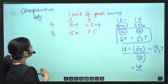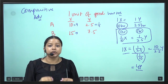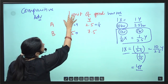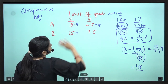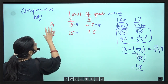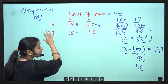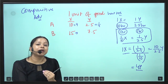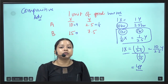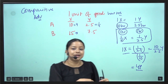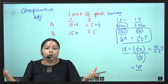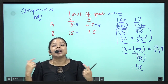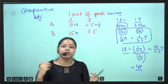Comparative advantage means the country where the opportunity cost of producing a good is low has the comparative advantage in that good. Country A and Country B are both producing goods X and Y. The country that has a comparative advantage in a good will specialise in producing that good, and both countries will trade with each other — best of both worlds. If India is good at one thing and the US at another, each produces what it's good at and then exchanges.